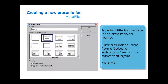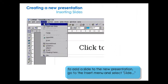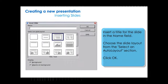On this part, type in a title for the slide in the area marked name. Click a thumbnail slide from the Select and Auto Layout section to select that layout, then click OK. To add a slide to the new presentation, go to the Insert menu and select Slide. Insert a title for the slide in the name field, choose the slide layout from the Select and Auto Layout section, and click OK.